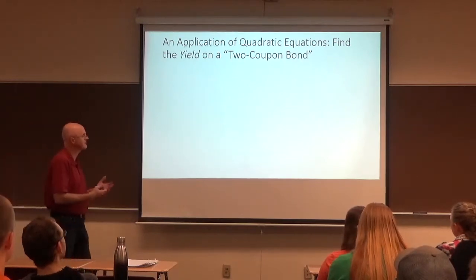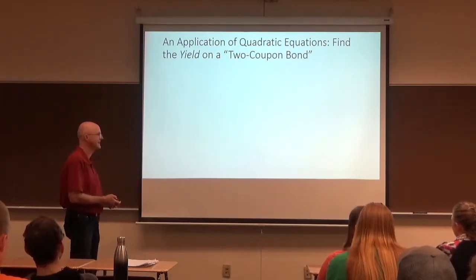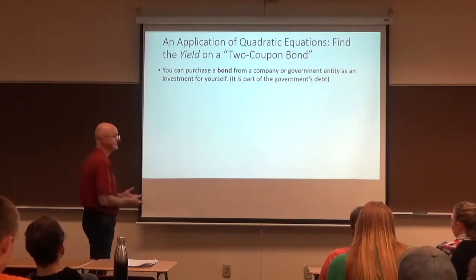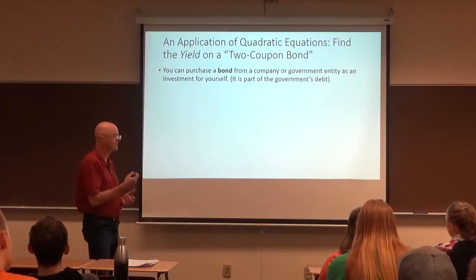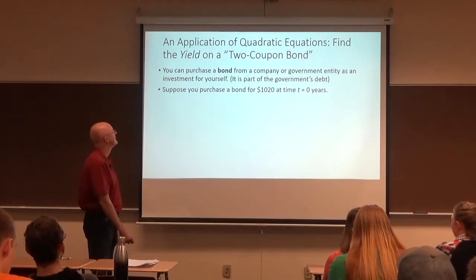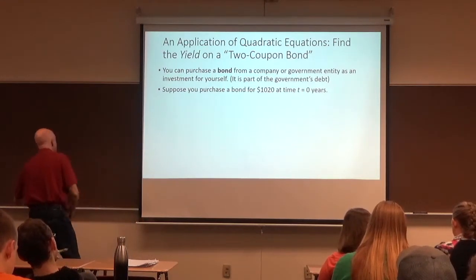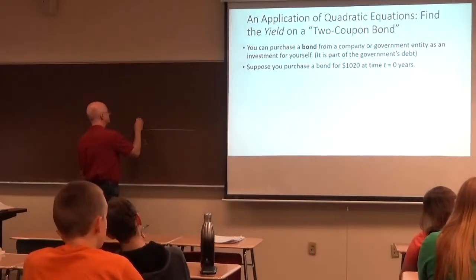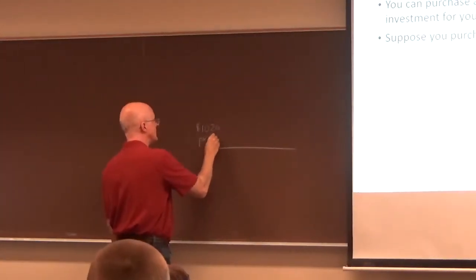I wanted to talk about that because the first main content slide here is an application of quadratic equations to finding something called the yield of a two-coupon bond. That's kind of a strange sounding thing. What is it? Well, first of all, what is a bond? You can purchase a bond from a company or a government entity like the federal government or like the state government or a local government. You buy the bond, but that really is an investment. You don't do anything with the bond besides hold it as an investment. You get some money back. Suppose, for example, you purchase a bond for $1,020 at time t equals zero years. Helpful to make a little number line. So here's time zero. You're going to purchase the bond for $1,020 at time zero.